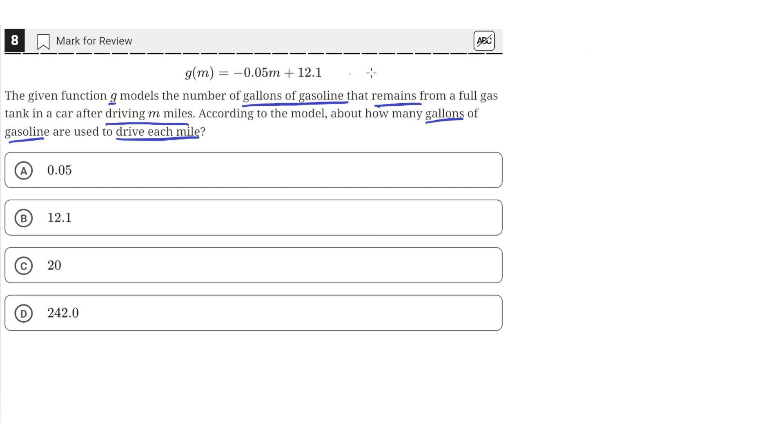So we have this equation that gives us the number of gallons of gasoline remaining after driving m miles. We can use that to find how much gasoline is used per mile by just increasing m by one and seeing how much the gallons of gasoline changes.